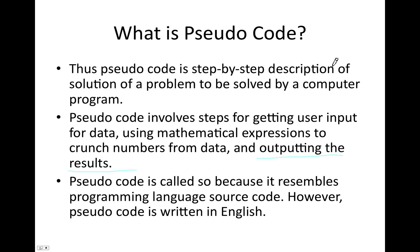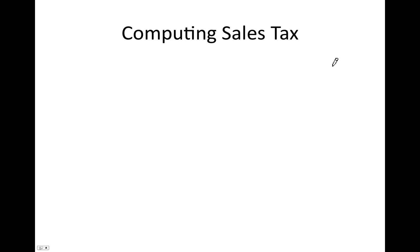For example, when you purchase something from a store, you have an item price, you pay some sales tax on it, and then you pay a total price which is the sum of item price plus sales tax. You can certainly write a computer program to do this kind of computation. So we'll take that example — computing sales tax — in pseudocode.